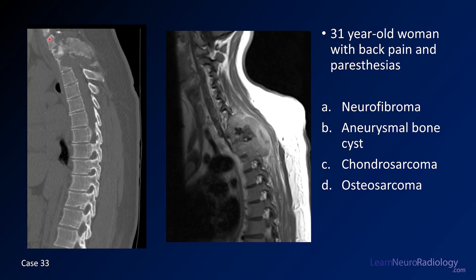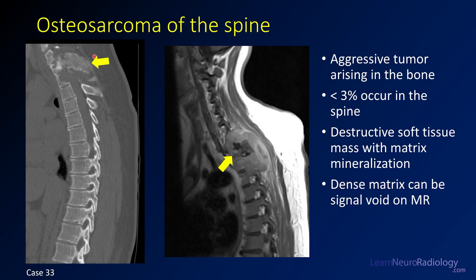The major clue here is a destructive mass, which points to one of the sarcomas. The pattern of bone formation is cloud-like — more of an osteoid pattern of new bone. Chondroid matrix tends to be arcs and rings, which is not what you're seeing here. On the MR, you have a destructive mass with destruction of adjacent bone and a lot of enhancement. The intrinsically T1 hyperintense material in the middle is dense matrix from new bone formation. So you have a destructive mass forming bone — that's probably an osteosarcoma. These are aggressive tumors, not many occur in the spine, but if you see them, think osteosarcoma.